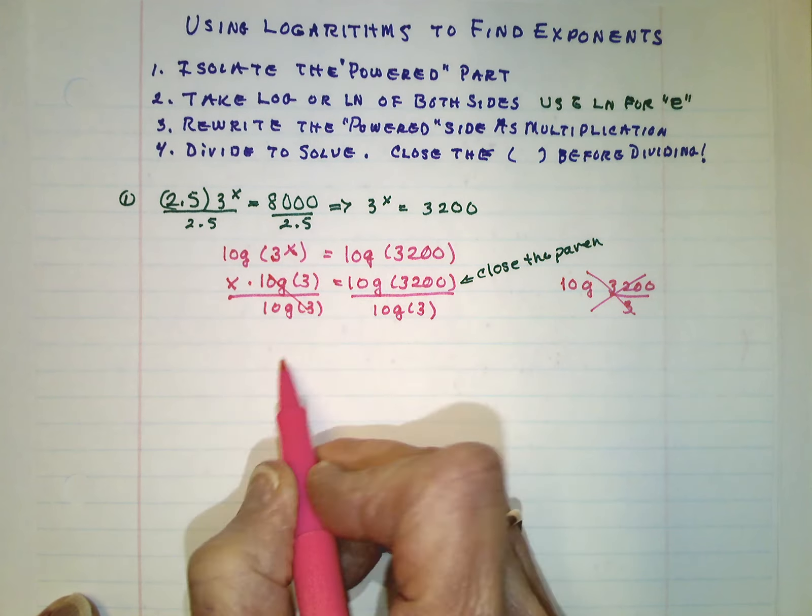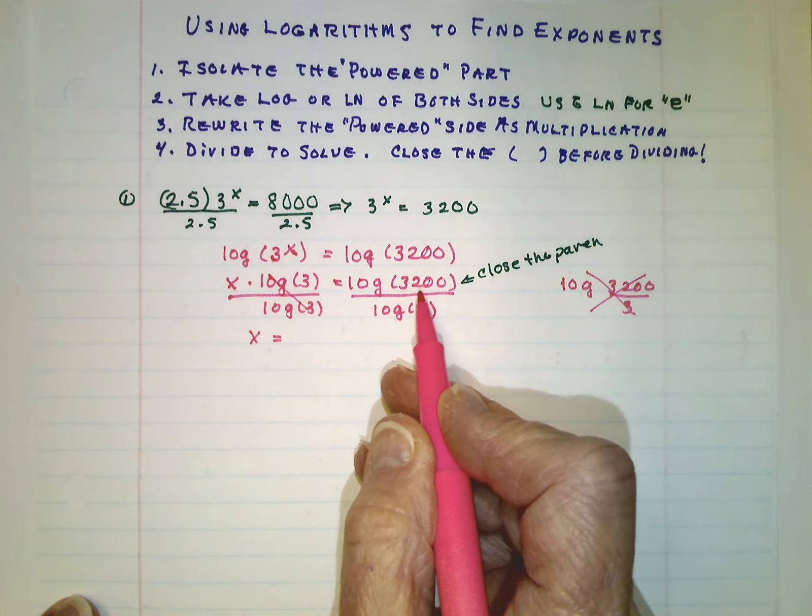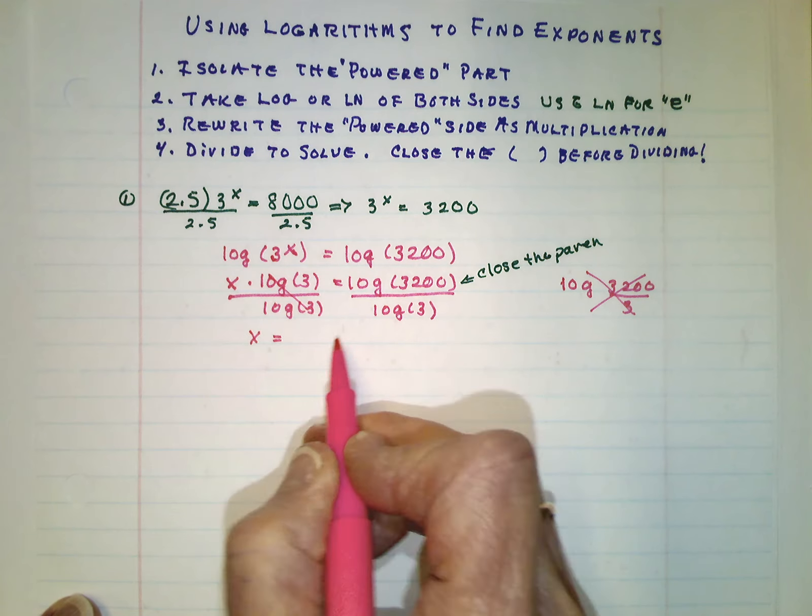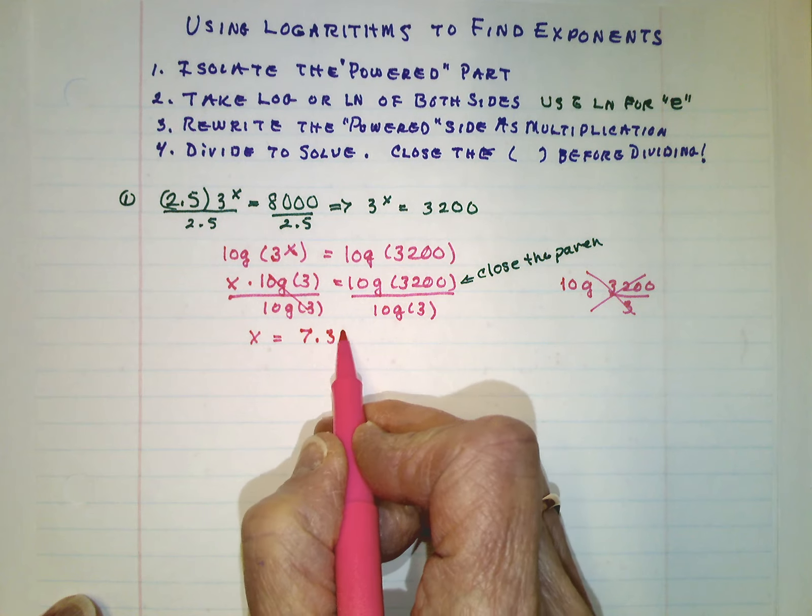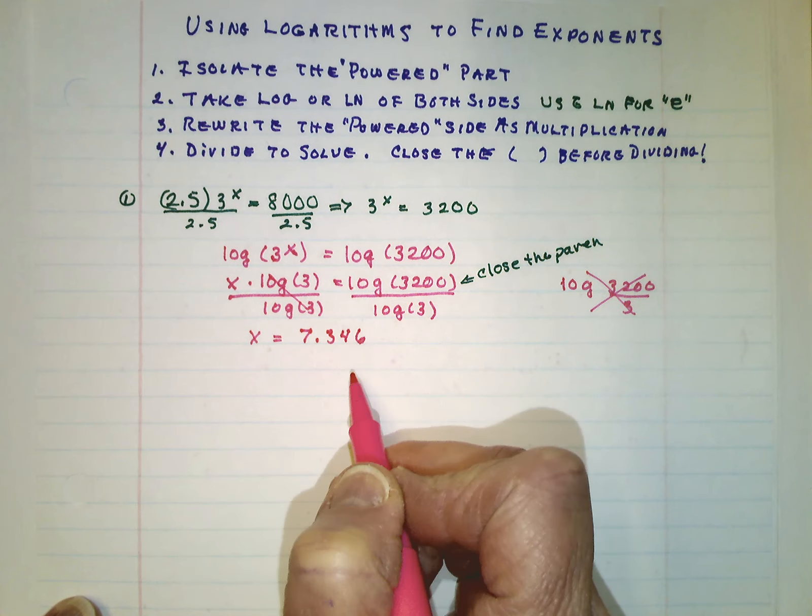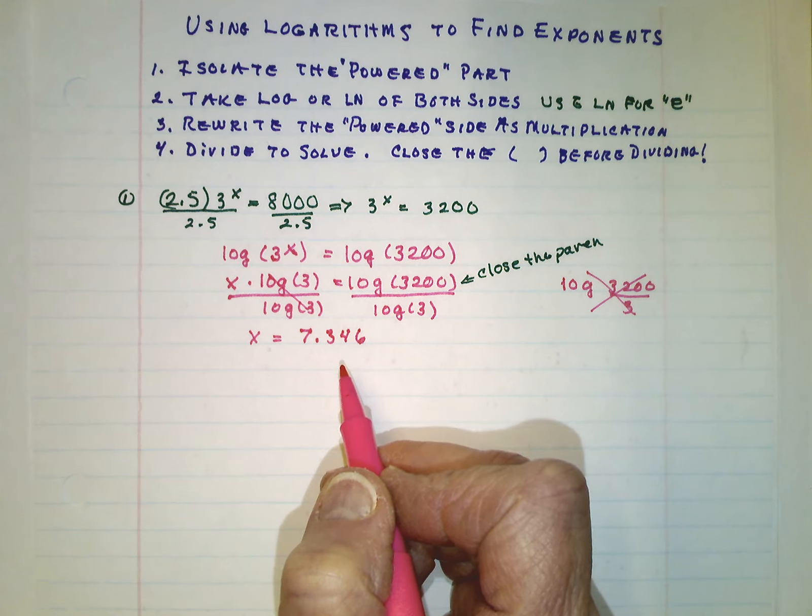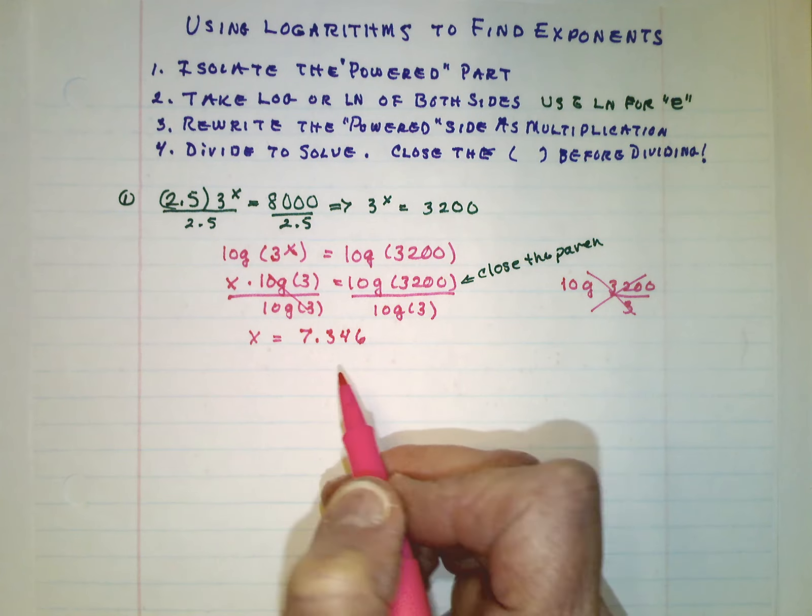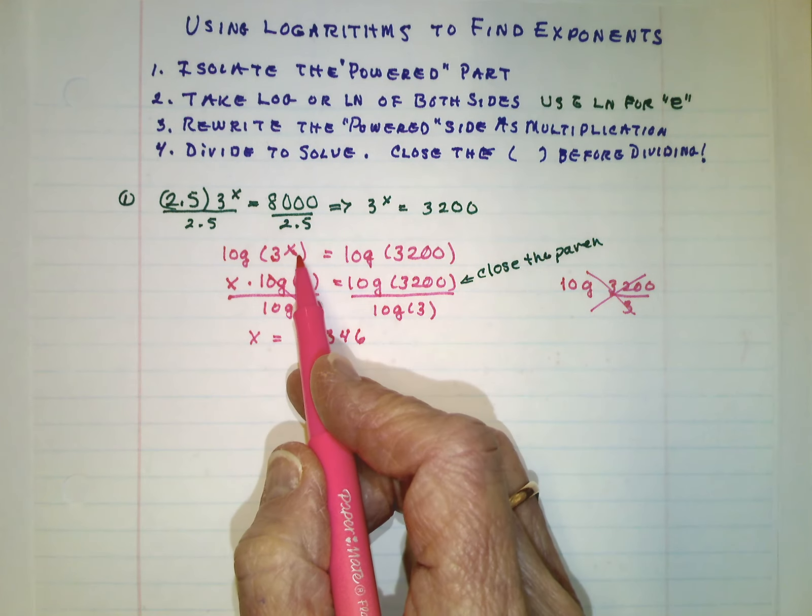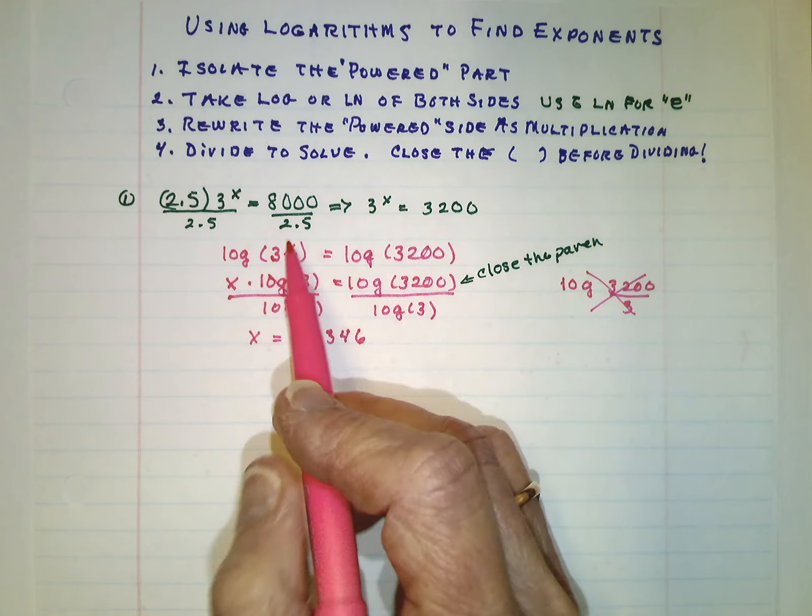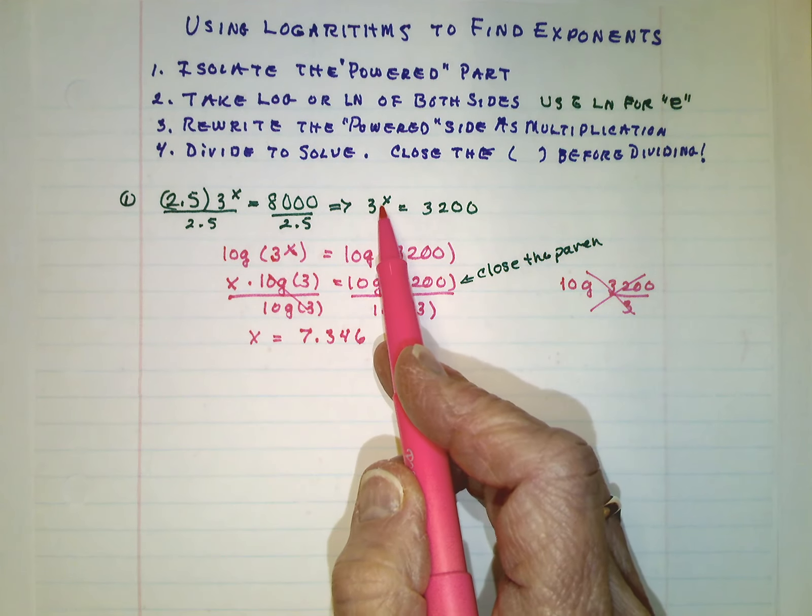So this side now, these cancel out. And we have x equals whatever the calculator tells us this answer is. I think it's approximately, to the nearest thousandth anyway, 7 and 346 thousandths. And that's the answer. That is the exponent that we put on the 3. We could check it by putting the exponent here, or we could check it by putting the exponent here.